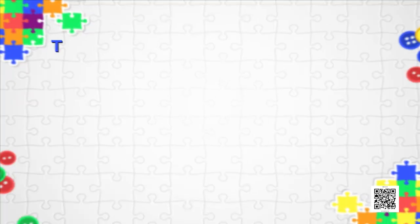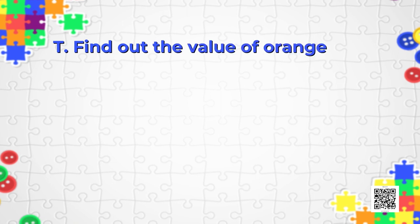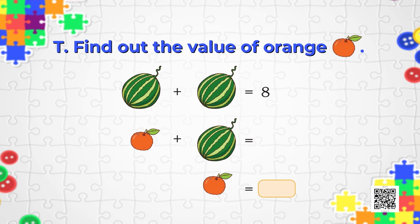After the fun with coins, it's time to move on to the next puzzle — puzzle T. You have to find out the value of orange. The value of two watermelons is 8, and the value of one orange and one watermelon is 10. Now you have to find out what is the value of the orange.